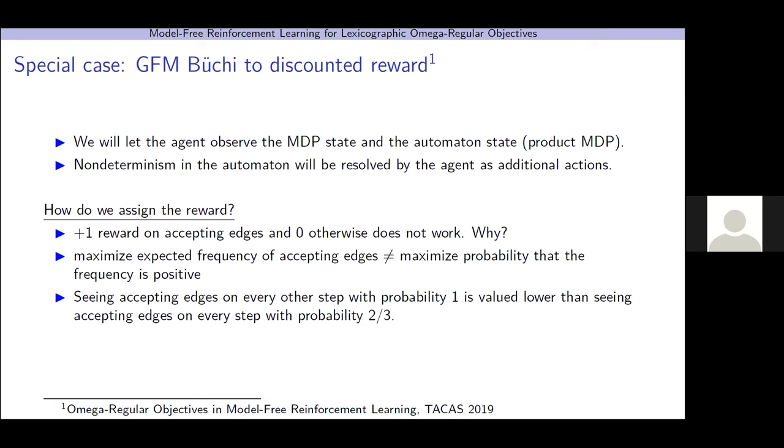Why is this the case? Maximizing this reward is equivalent to maximizing the expected frequency of seeing accepting edges. While maximizing for the Büchi objective is the same as maximizing probability that the frequency is positive. These are not equivalent. As a concrete example, if we have two possibilities, we can either see accepting edges on every other step with probability 1, or we can see accepting edges twice as often, but with probability 2/3. This reward will give higher value to this second strategy, which achieves lower probability. So, we need a different reward function.